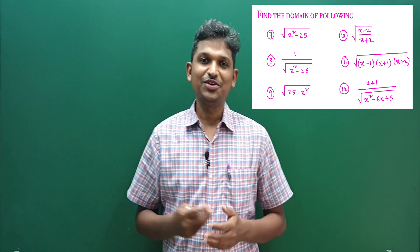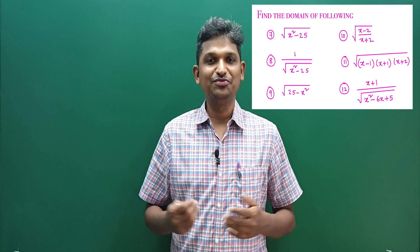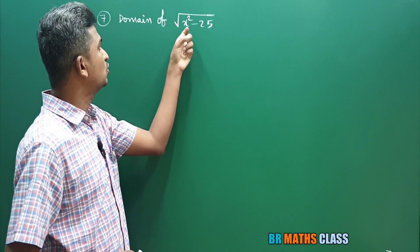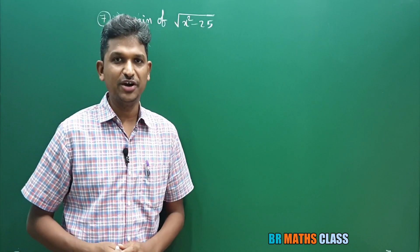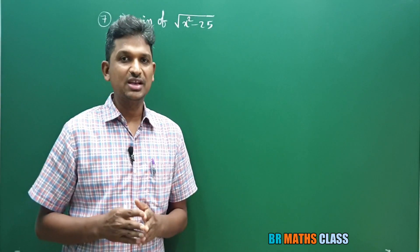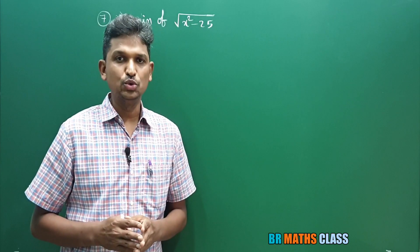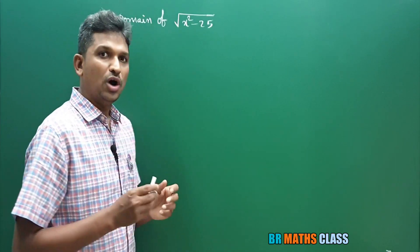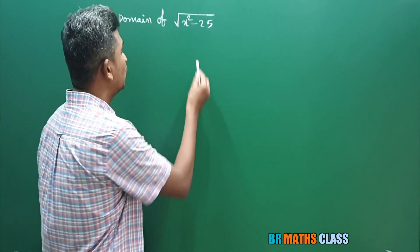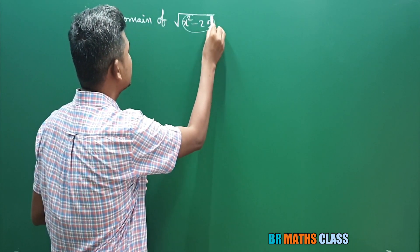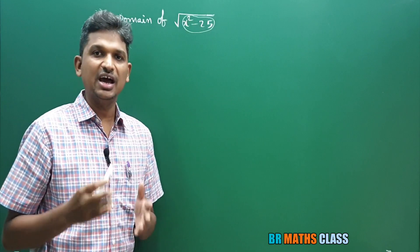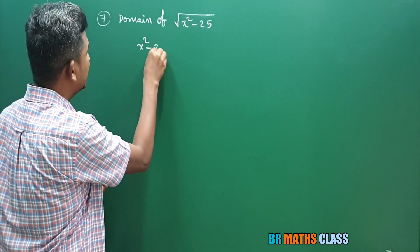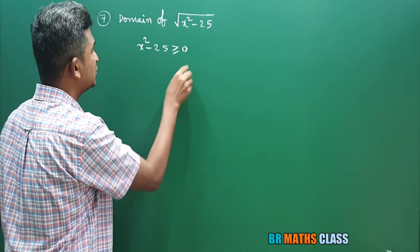For what values of x the function is defined — that is known as domain of the function. Observe question number 7: domain of square root of x squared minus 25. In today's class, all six problems will have square root. Whatever expression is there in square root, this expression must be greater than or equal to zero. So here I'll write x squared minus 25 must be greater than or equal to zero.